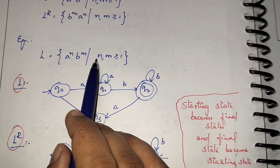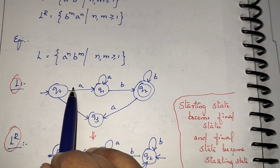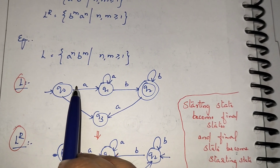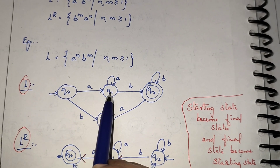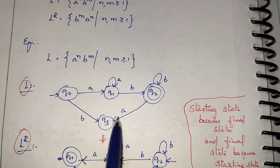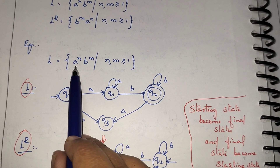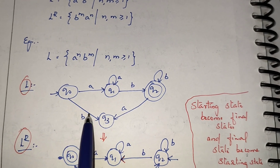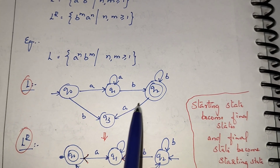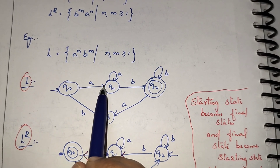The correct language is a raised to n b raised to m, where n and m are greater than or equal to 1 — n number of A's followed by m number of B's. In the DFA, we show transitions on A from q0, transitions on A and B in the middle state, and transitions on B from q2. From q0 we don't show B so it goes to a dead state, and from the final state seeing A also goes to the dead state.